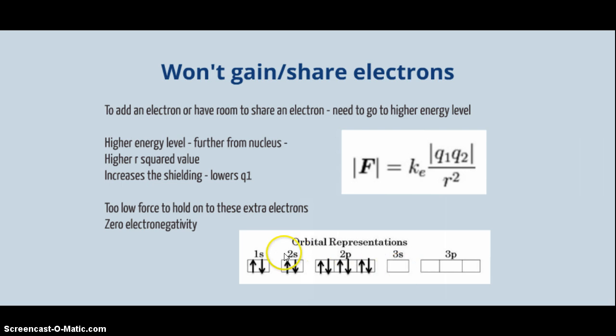Now this orbital is further from the nucleus. So if you remember our equation about the force, that would increase the r-squared value. Not only is this electron further from the nucleus, it is shielded by all of these electrons. They're between the nucleus and the 3s orbitals. So lots of shielding.